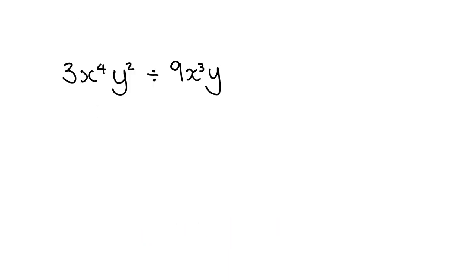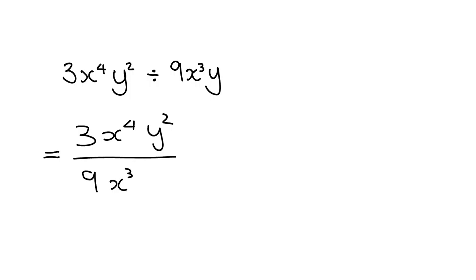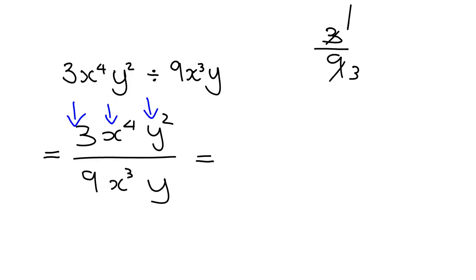We can get a lot more complicated in the kind of question we have to deal with. But just like we did with the multiplication, if we go through it step by step — dealing with the numbers, then the x's, then the y's — it actually isn't so difficult. With division, I always find it easiest to write it as a fraction. So first write it as a fraction, and then work from there. We first deal with the numbers: we've got a 3 and a 9. Divide the top by 3, divide the bottom by 3, and so what you're left with of the numbers is a 1 at the top and a 3 at the bottom.